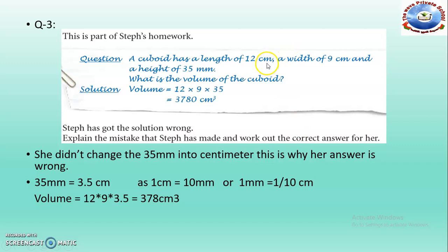Length is given in centimeters, width is given in centimeters, but height is not given in centimeters. So first of all we will convert this height — 35 millimeters — into centimeters. We need to make the units the same. The mistake is that Steph did not convert 35 millimeters into centimeters, which is why her answer is wrong.